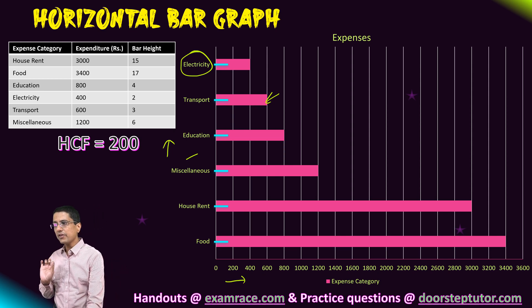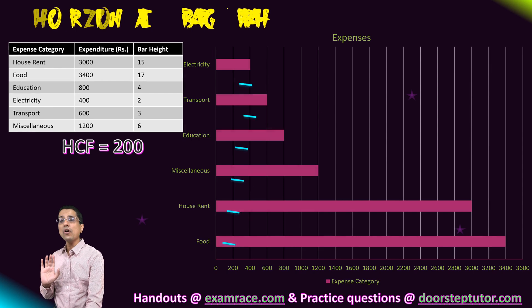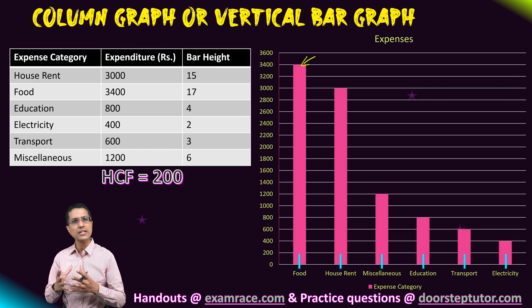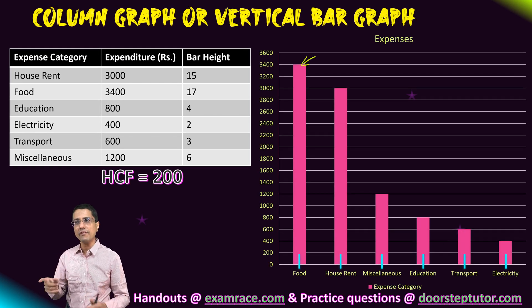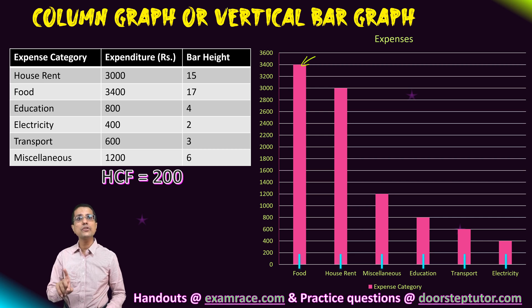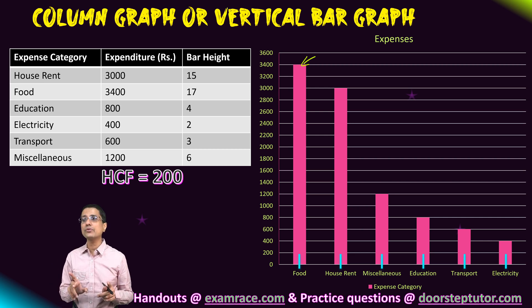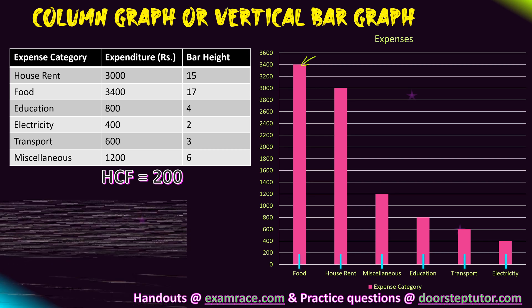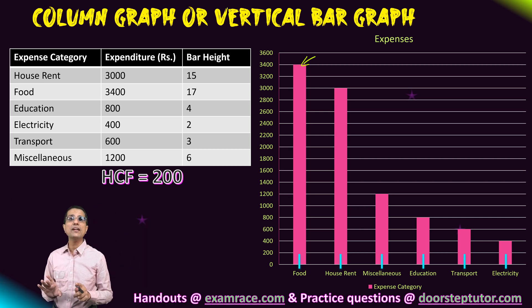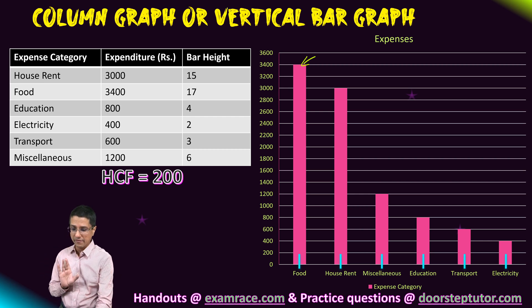Typically when you are asked to draw a bar graph, you will draw the vertical bar graph unless you are specifically asked to draw a horizontal bar graph. Vertical bar graphs are also known as column graphs.